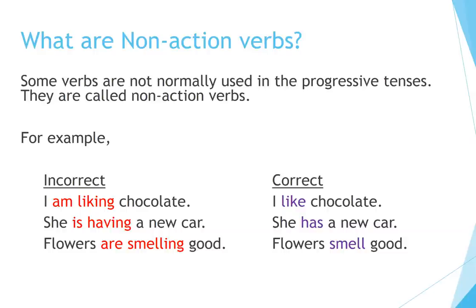For example: Incorrect — 'I am liking chocolate.' Correct — 'I like chocolate.' Incorrect — 'She's having a new car.' Correct — 'She has a new car.' Incorrect — 'Flowers are smelling good.' Correct — 'Flowers smell good.'